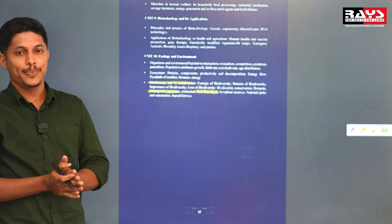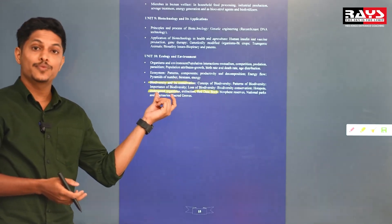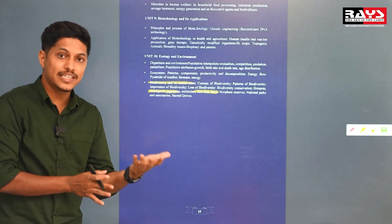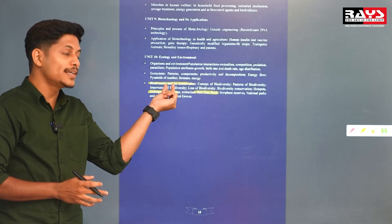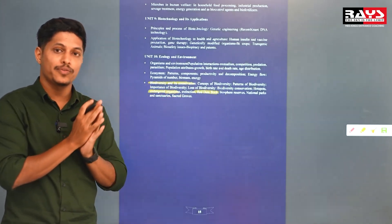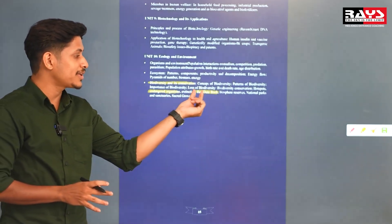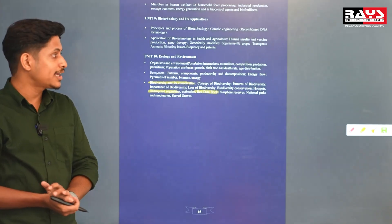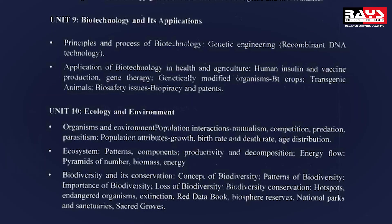Endangered species are living organisms coming into a threatened category — that is the Red Data List. Extinct species include Dodo, Thylacine, and Coggan. The Red Data Book has eight categories of different organisms including extinct species. Biodiversity and conservation is where we analyze this data.